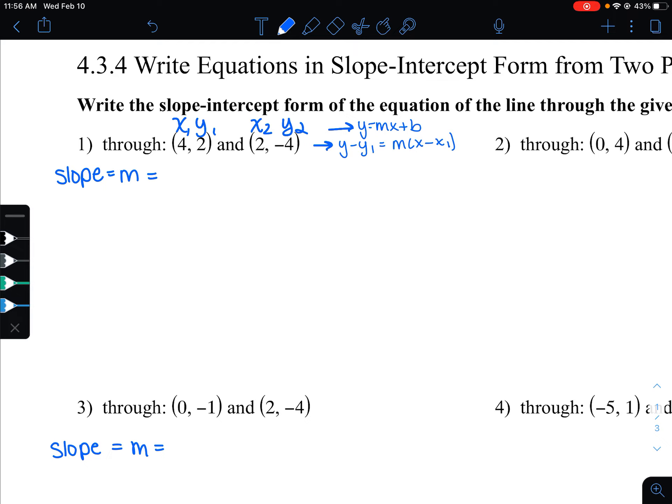And we're going to find the slope. So remember the slope formula, we subtract the y's on top, so negative 4 minus 2, and we subtract the x's on bottom, so 2 minus 4. We simplify that. The top would be negative 6, the bottom would be negative 2, which simplifies to a positive 3. So there's our m value.